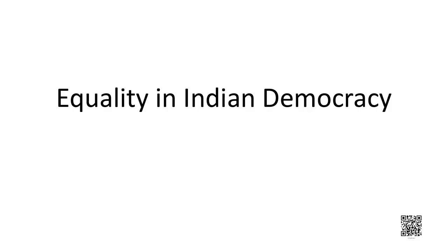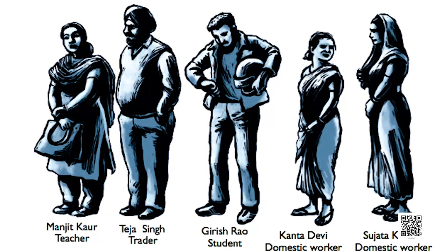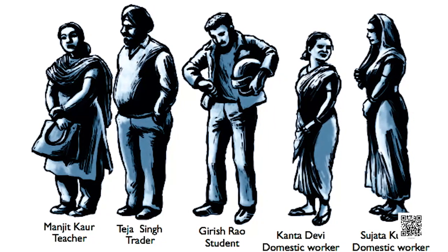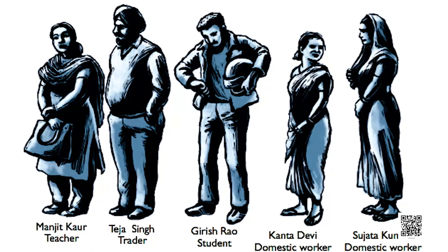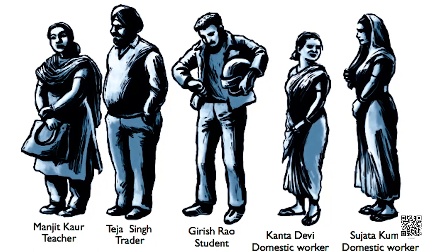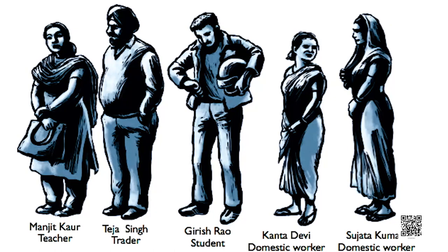Hello friends, my name is Arshan and today we are going to do the first chapter of your NCERT Social Science textbook. The name of the first chapter is 'Equality in Indian Democracy.' Notice the pictures of these people: Manjeet Kaur, a teacher; Tejas Singh, a trader; Girish Rao, a student; Kanta Devi and Sujata Kumari, both domestic workers. Notice the different backgrounds of these people.